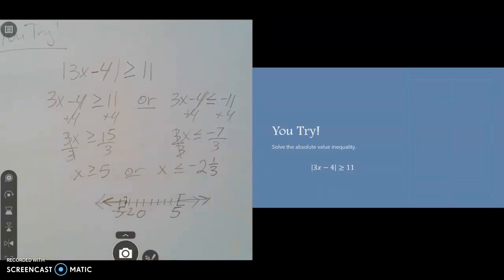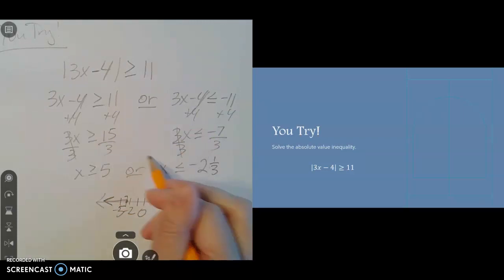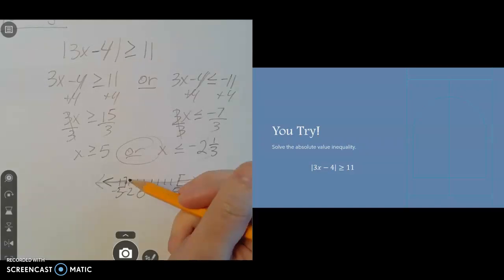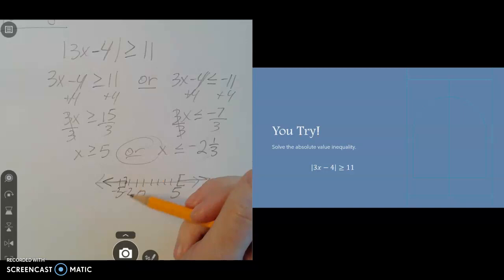It is an or inequality, so you're doing the union. You're putting those two together. We're not looking for where they overlap. We're just putting them both together, so they both are part of our solution. You are going to have this one in two pieces. With interval notation, you always go left to right.